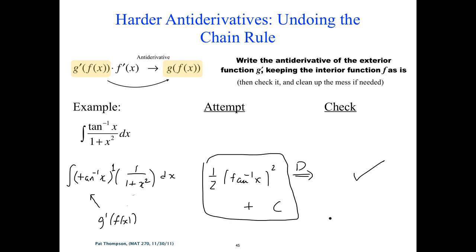My experience helping students is that they can make an attempt, but taking the derivative to check is where they struggle. We've got to know the chain rule itself if we're going to have any success at this. This whole thing is based on knowing the chain rule and learning to think backwards — seeing those expressions and asking what function using the chain rule would give me what I started with. If you have a deficiency with the chain rule, get up to speed on it before you even start working on these.